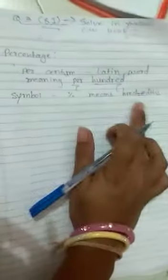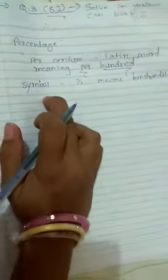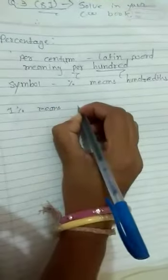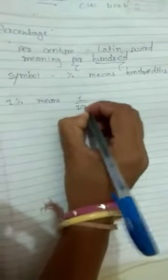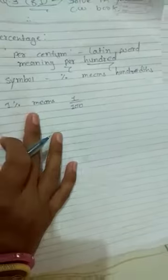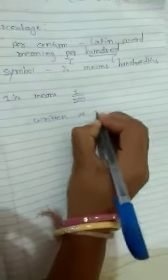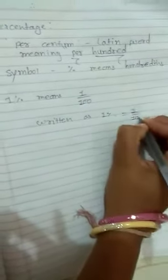Per hundred. That is, one percent means one out of hundred. So it can be written as 1% equals 1 out of 100, or 0...